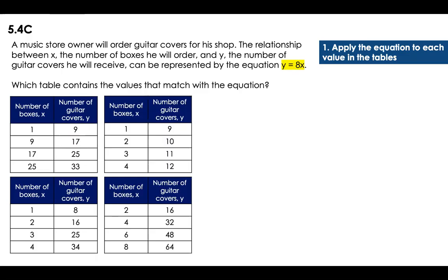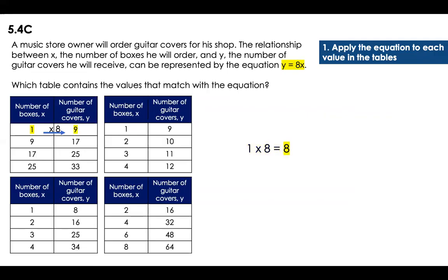So the equation is y equals 8 times x. That means that all of the x, I'm going to multiply them by 8, right? So now let's go with the first one. 1 times 8 is equal to 9? I don't think so. 1 times 8 is equal to 8. It's not 9. So that one cannot be. Let's go with the next one. 1 times 8, I already told you that it was 8, so it cannot be 9.